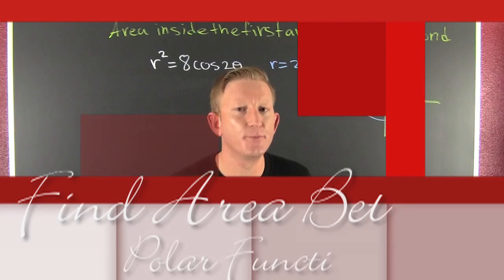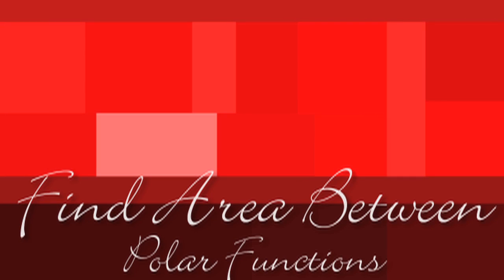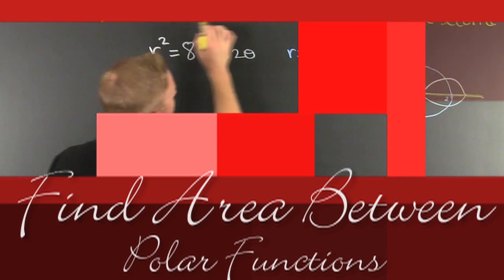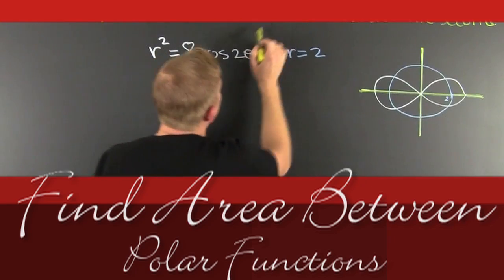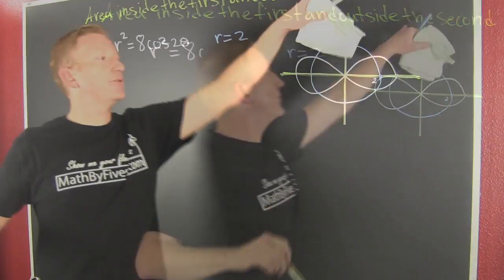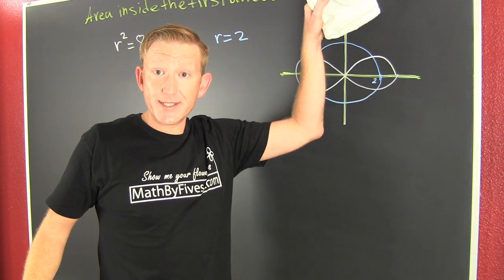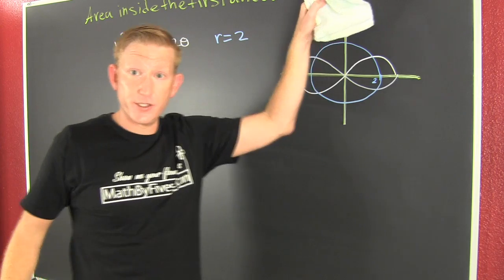More with area of polar curves — a much harder problem. What are we talking about? We're trying to find the area inside the first curve and outside the second one. So let's look at our functions.